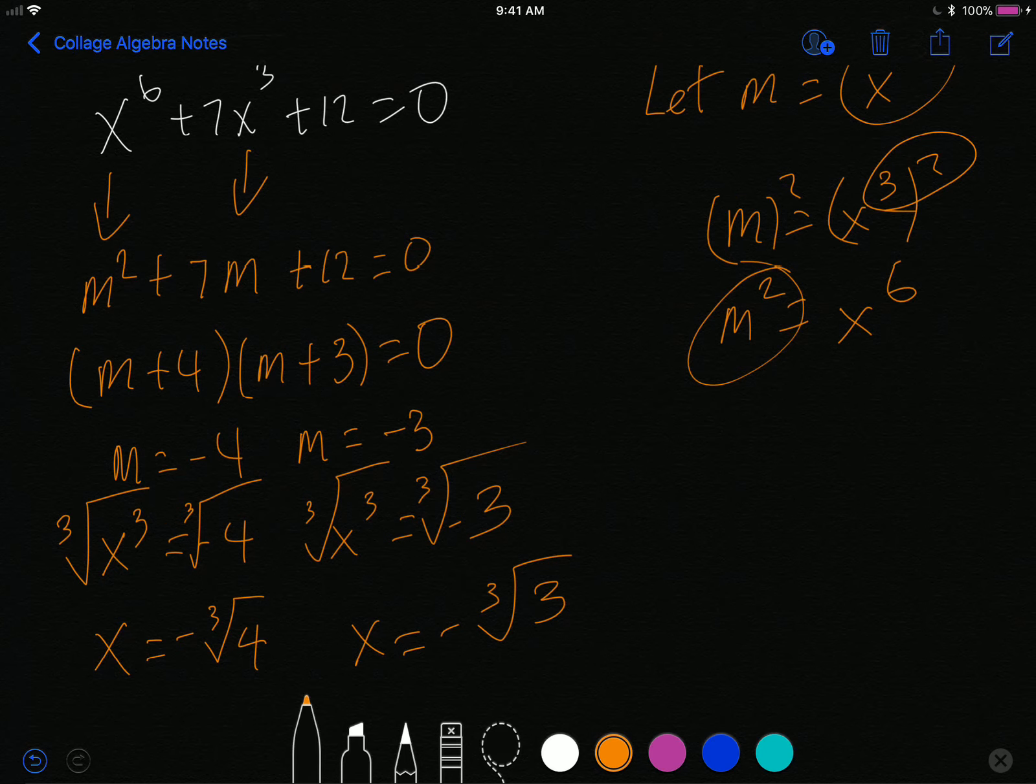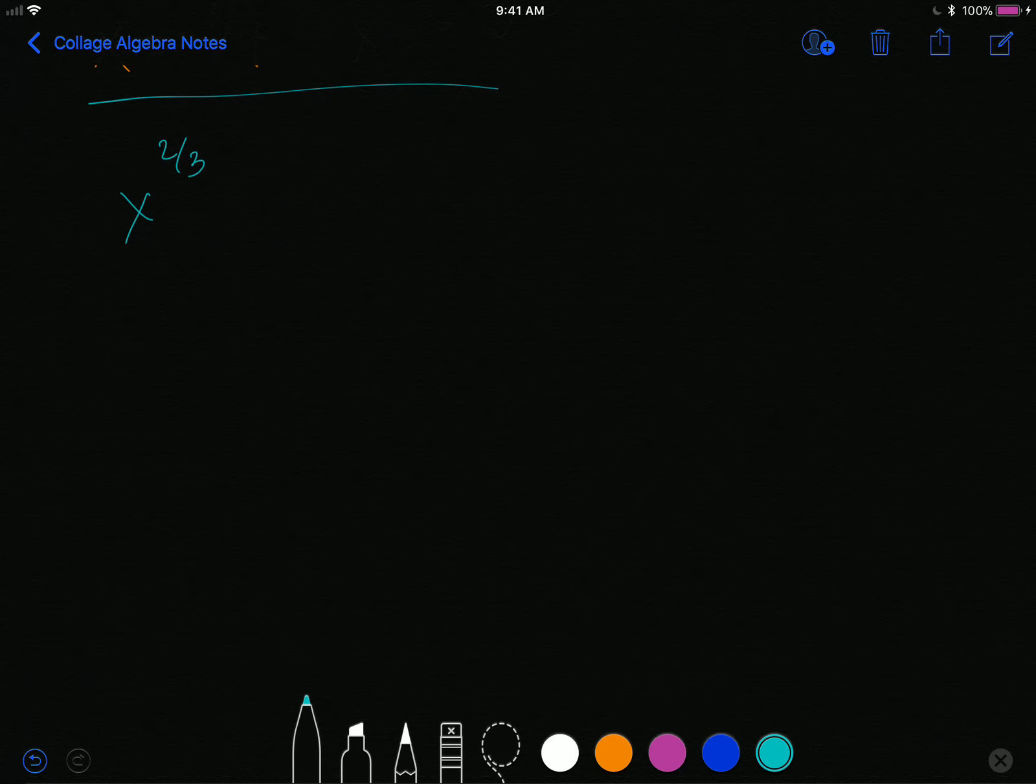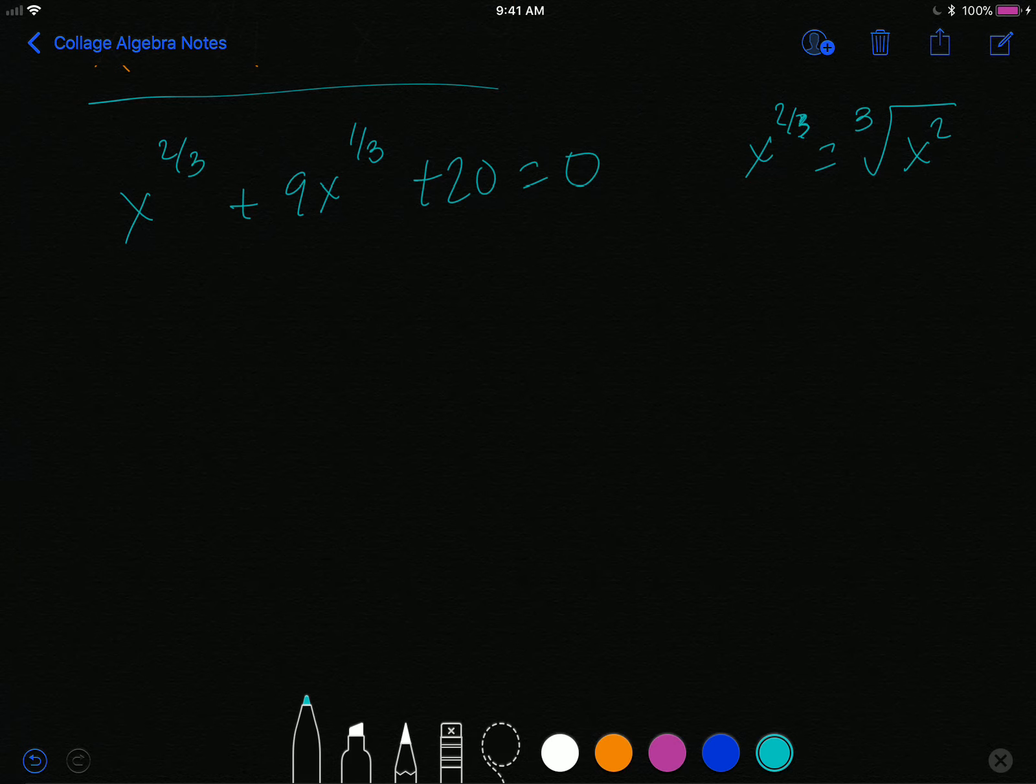One more example that looks a little weird. That might help you out a little bit. One more example is, let's say I have this right here: x to the two-thirds power plus 9x to the one-third power plus 20 is equal to zero. By the way, a side note, x to the two-thirds power is the cube root of x squared. But we'll get to that a little bit later. But again, though, if you look carefully, what is one-third doubled? One-third doubled is two-thirds. And so I have that dynamic. Again, I have three terms: one, two, three. And so this is a quadratic. And because it's a quadratic, I will let m equals x to the one-third.